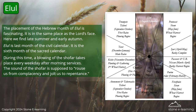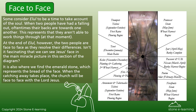The placement of the Hebrew month of Elul is fascinating — it is in the same place as the Lord's face, in late summer and early autumn. Elul is the last month of the civil calendar and the sixth month of the sacred calendar. During this time, a blowing of the shofar takes place every weekday after morning services; the sound of the shofar is supposed to rouse us from complacency and jolt us to repentance. Some consider Elul to be a time to take account of the soul. When two people have had a falling out, their backs are towards one another, but at the end of Elul the two people are face to face as they resolve their differences. We can see Jesus' face in the main miracle picture in this section of the diagram, and this is also where we find the emerald stone, which represents the bread of the face. When the catching away takes place, the church will be face to face with the Lord Jesus.